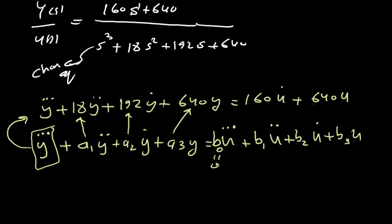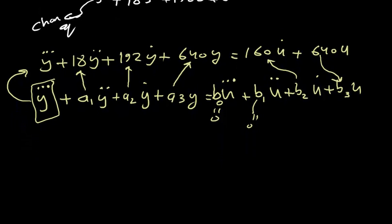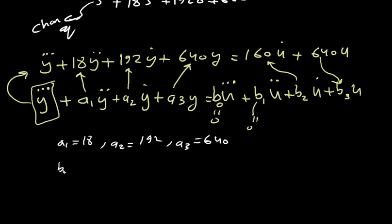Since there is no u‴ term in our equation, b0 = 0. There is no u″ term either, so b1 = 0. Comparing coefficients: a1 = 18, a2 = 192, a3 = 640, b0 = 0, b1 = 0, b2 = 160, b3 = 640.